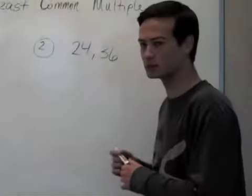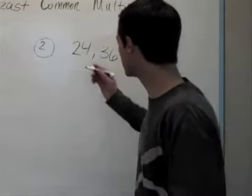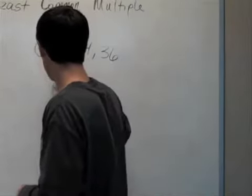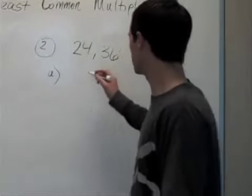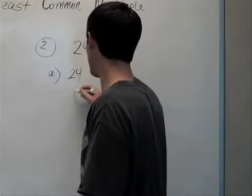Now we're finding the least common multiple of 24 and 36. Step A is to write the prime factors of 24 and the prime factors of 36.